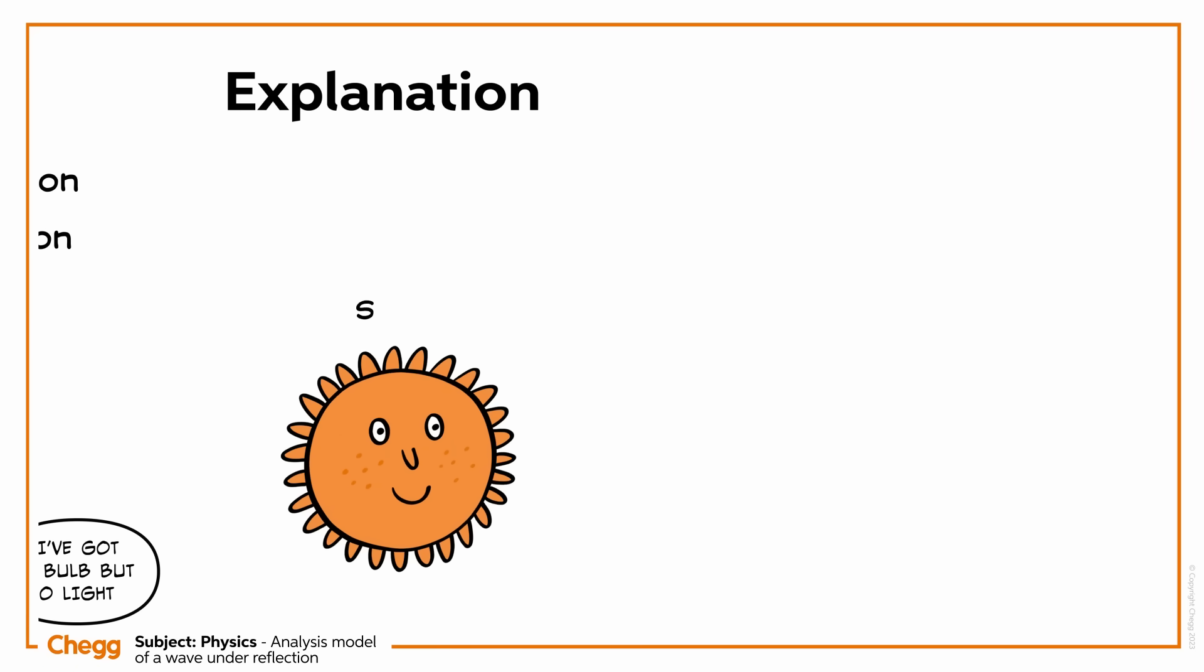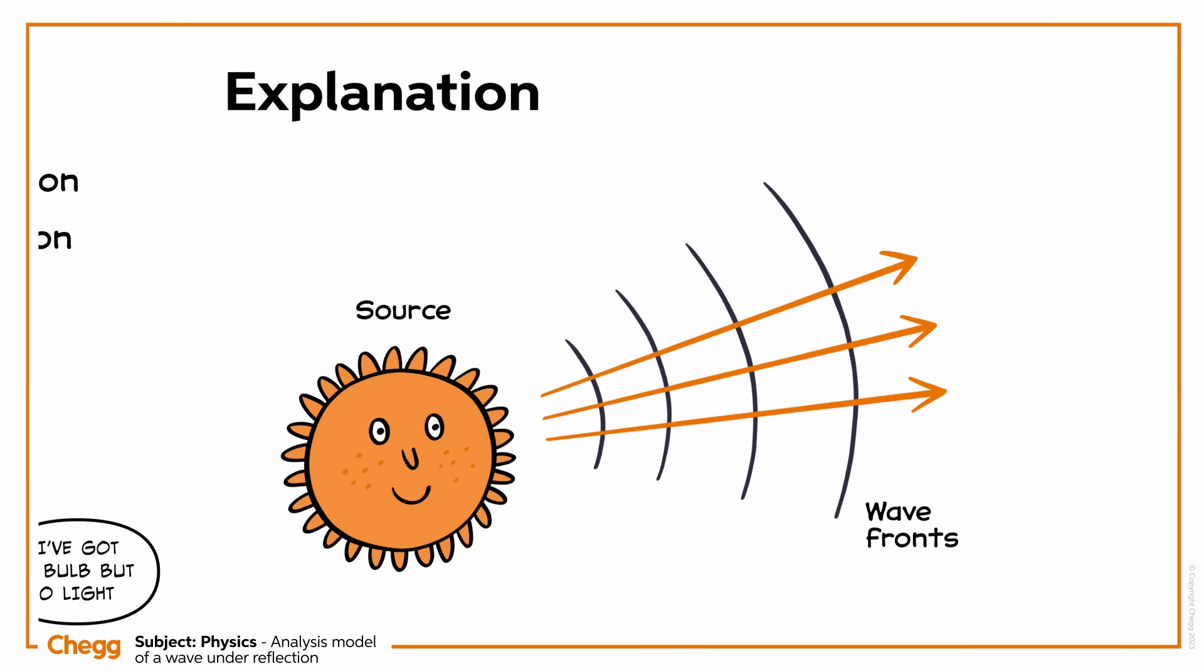Light waves from a source travel in spherical wavefronts and spread uniformly in all directions. An imaginary line that is along the direction of travel of the wave is called the ray.